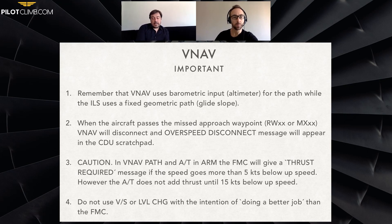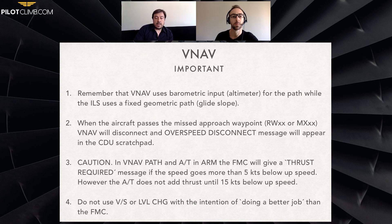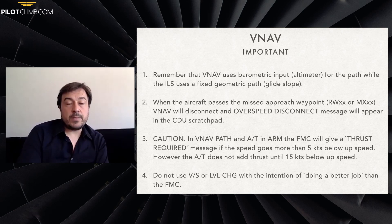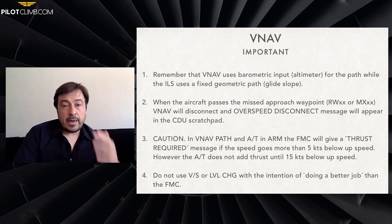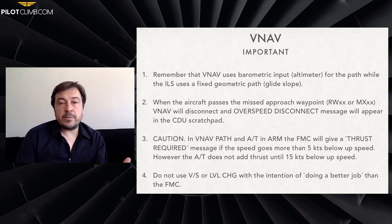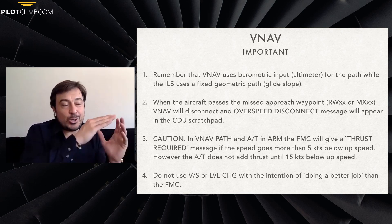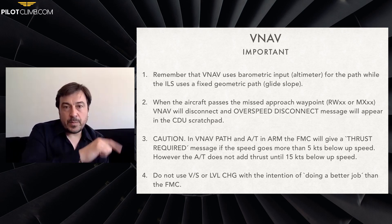What is important about VNAV — there are many things — but remember that VNAV is parametric input, using the altimeter for the path, while the ILS uses a fixed geometric glide slope path. As we were saying, you can actually fly a wrong path because you didn't introduce the right QNH. That's really important, especially when you're flying in clouds, because if you're not in contact with the terrain, you might think everything is leading you to do the right thing.